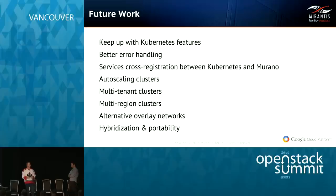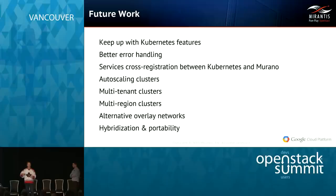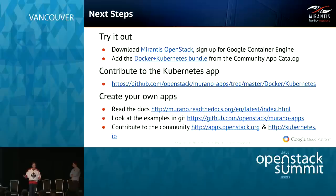I think it'd be really interesting — if you think about Murano as an application catalog, it's a registry of services available to users of the cloud. Kubernetes represents those as microservices, and cross-registration and understanding how that should work is an interesting challenge. How do you handle auto-scaling of clusters for external OpenStack events? How do you deal with multi-tenancy and multi-regions? How do you deal with alternative overlay networks? The most interesting thing we experimented with — though it wasn't quite ready — is how, at the push of a button, you could export the whole configuration and run it on Google Container Engine. There's a lot of great work to be done here, and I really want to invite all of you to participate with us.